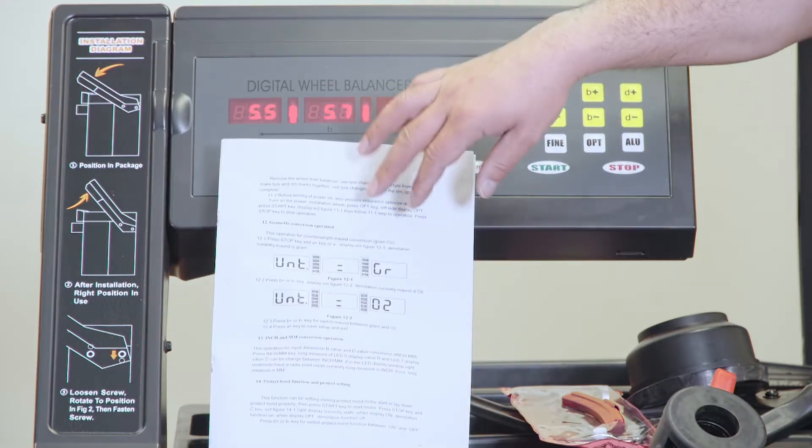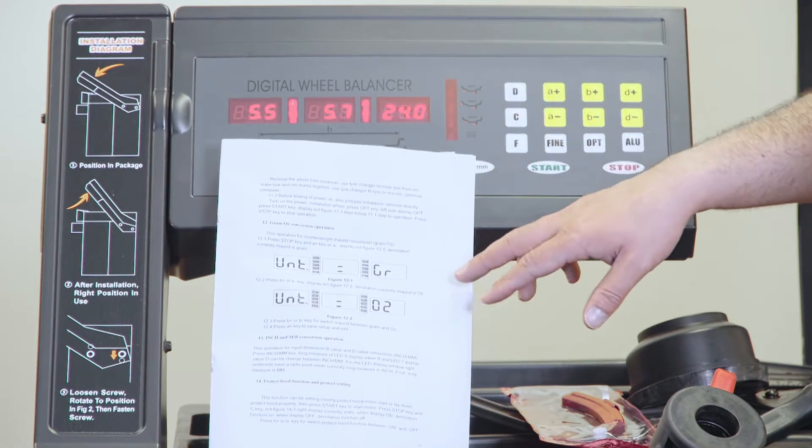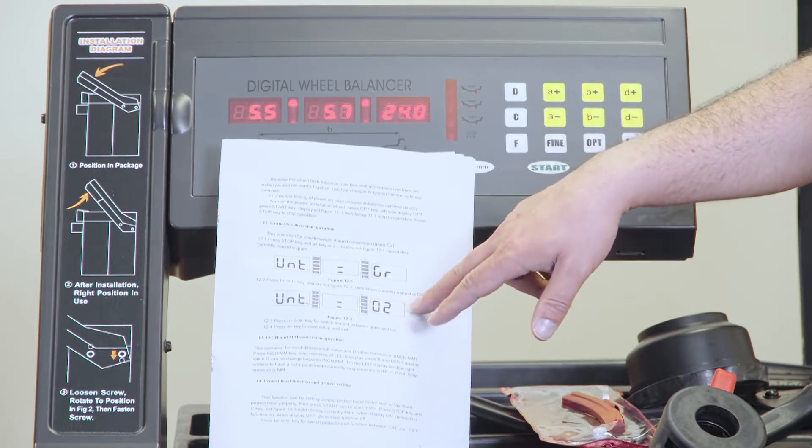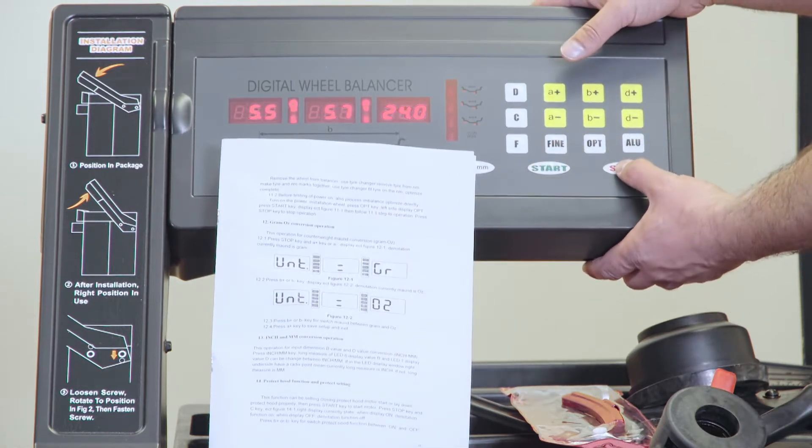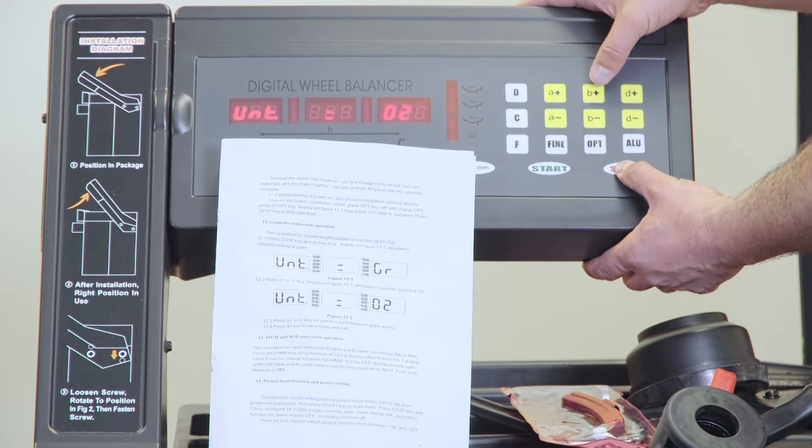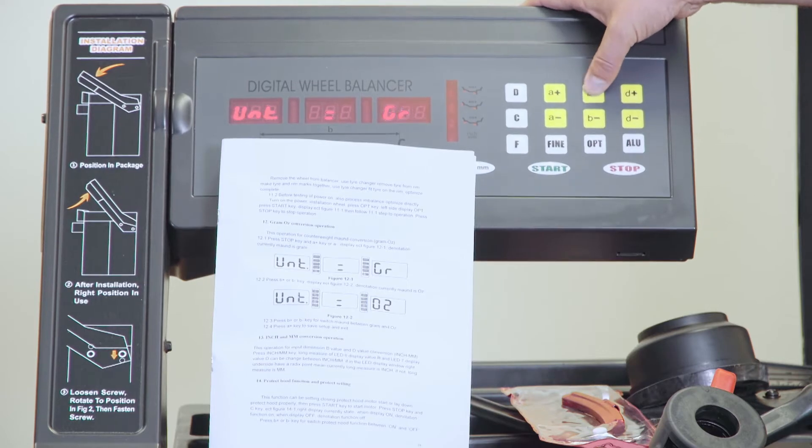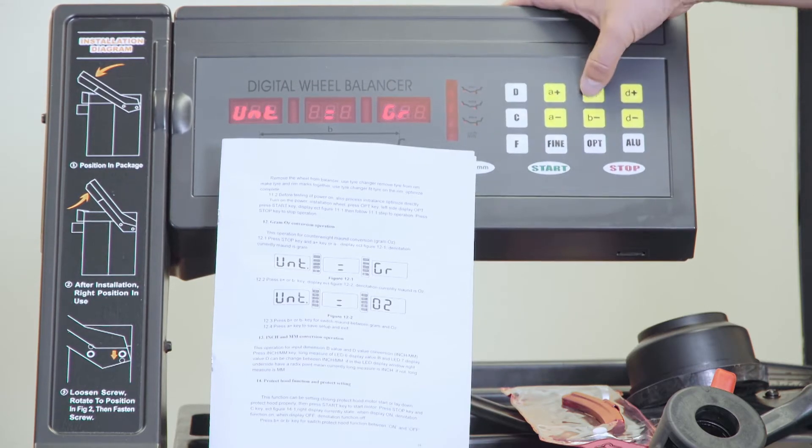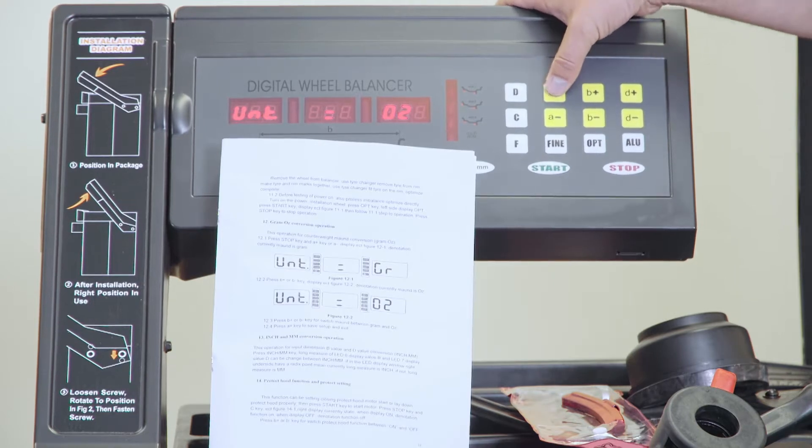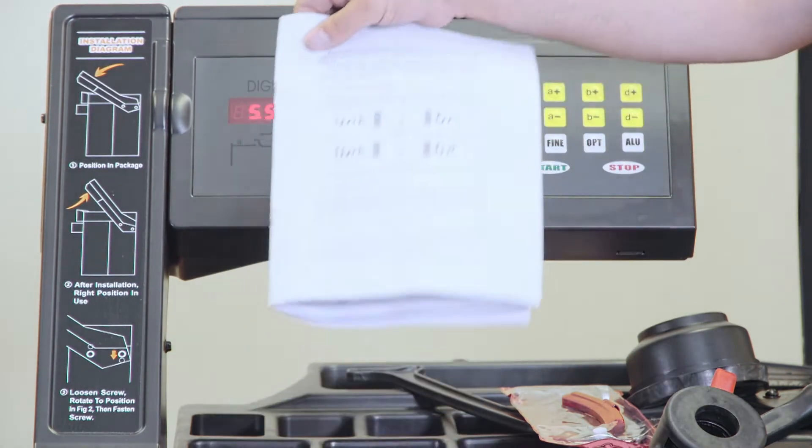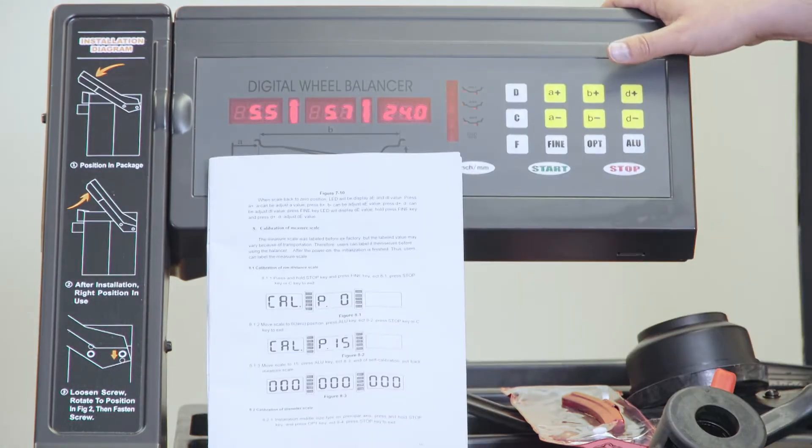For the settings, the only settings here are to change the unit of weight from grams to ounces. So to do that, you hold stop, A+, and change the unit. You hit B+, now it's in grams, change it to ounces, hit B+ again to save it. Press A+. And you'll find that on page 18 of the manual.